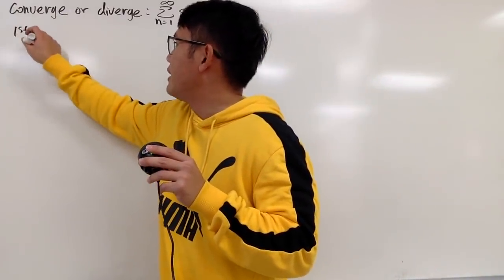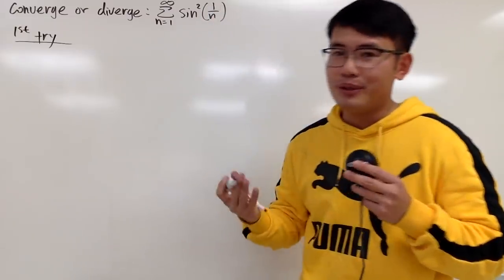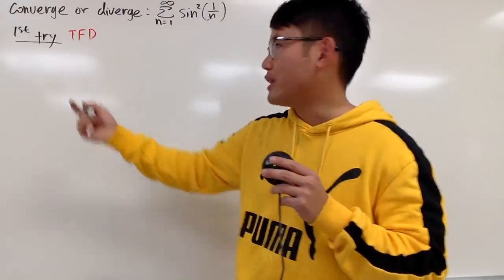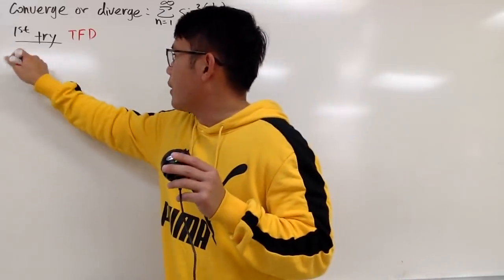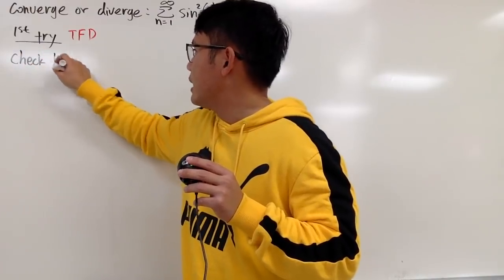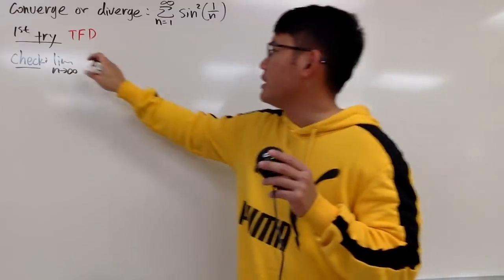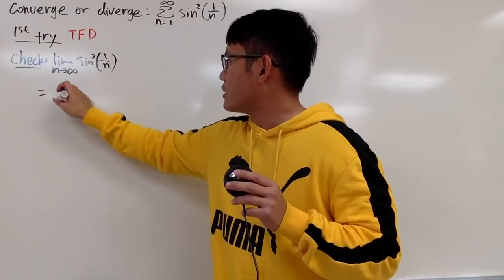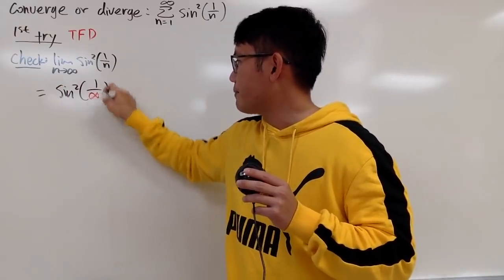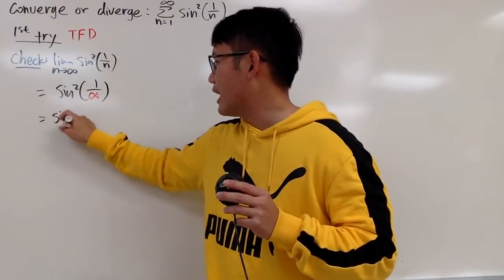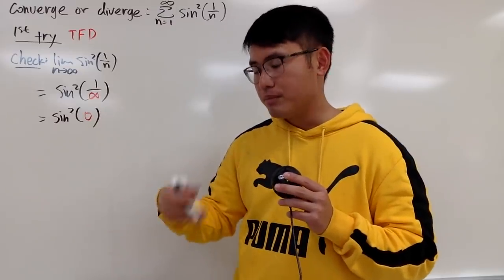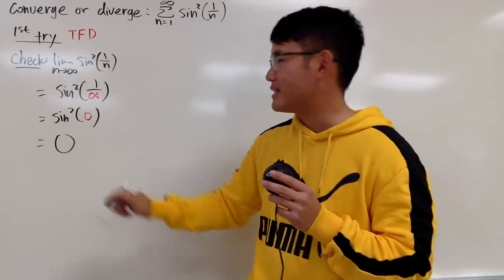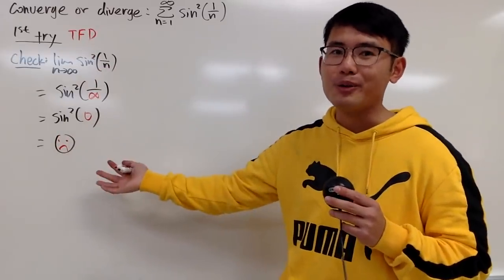So let me write this down. This is the TFD — we are trying the test for divergence. All we have to do is check the limit as n goes to infinity of a_n, namely sine squared of 1 over n. We can just substitute infinity: 1 over infinity is 0, so we have sine squared of 0, which is 0. But this 0 is a sad face for the test for divergence — we cannot draw any conclusion in this case.